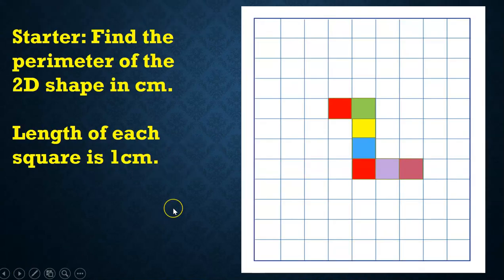And for our starter activity, find the perimeter of the 2D shape in centimeters. Take note, length of each square is 1 centimeter. Pause the video and do the activity.